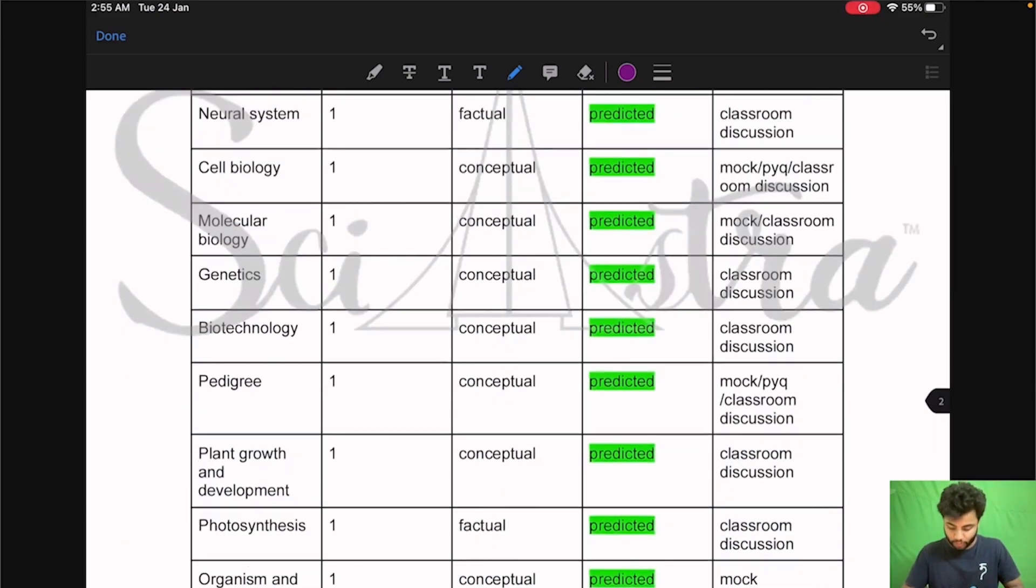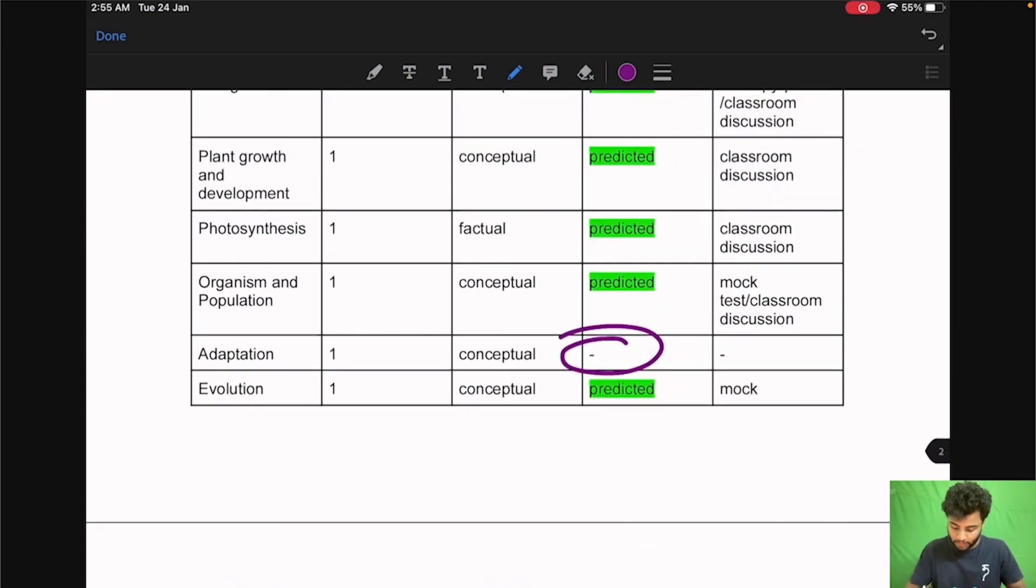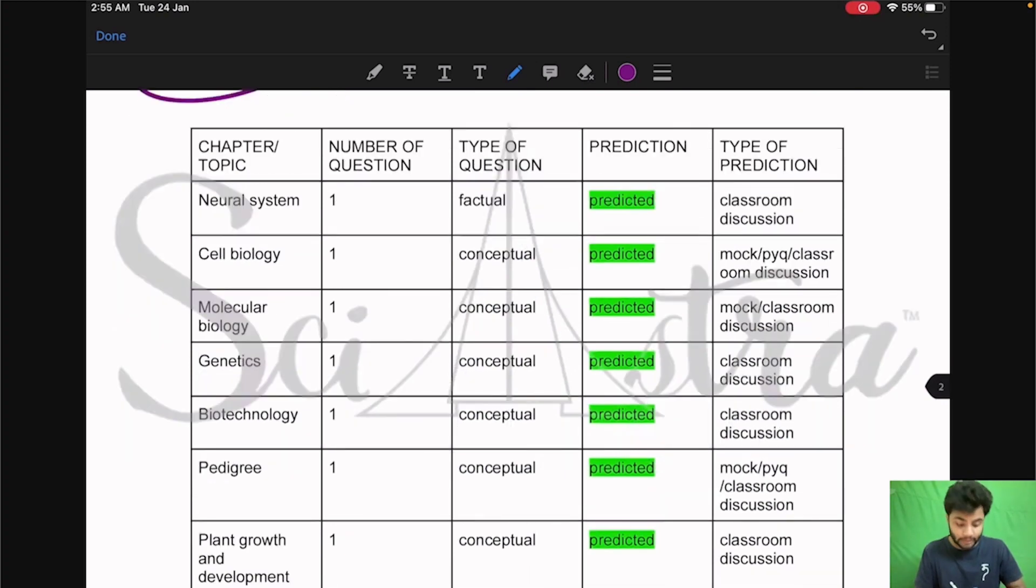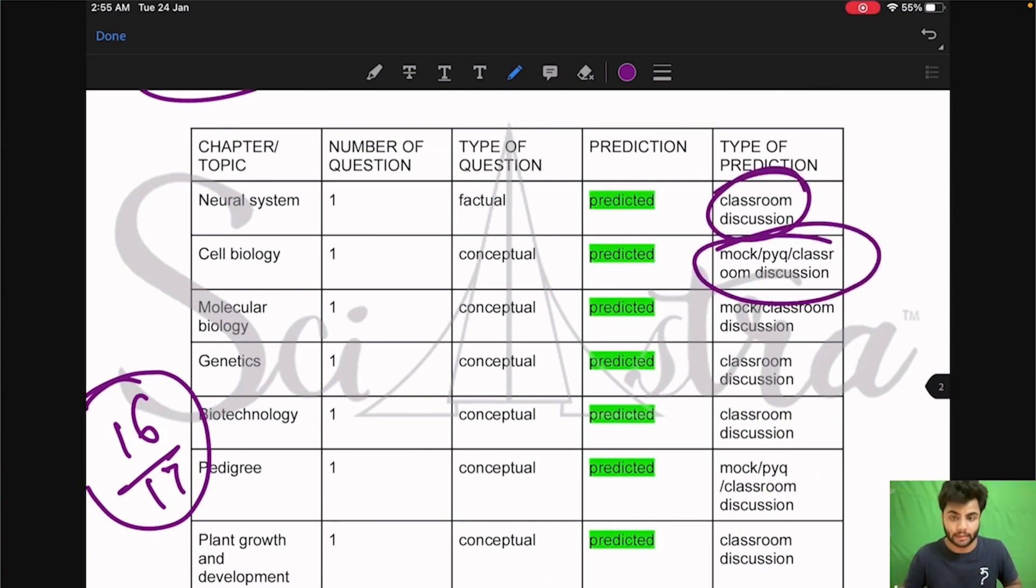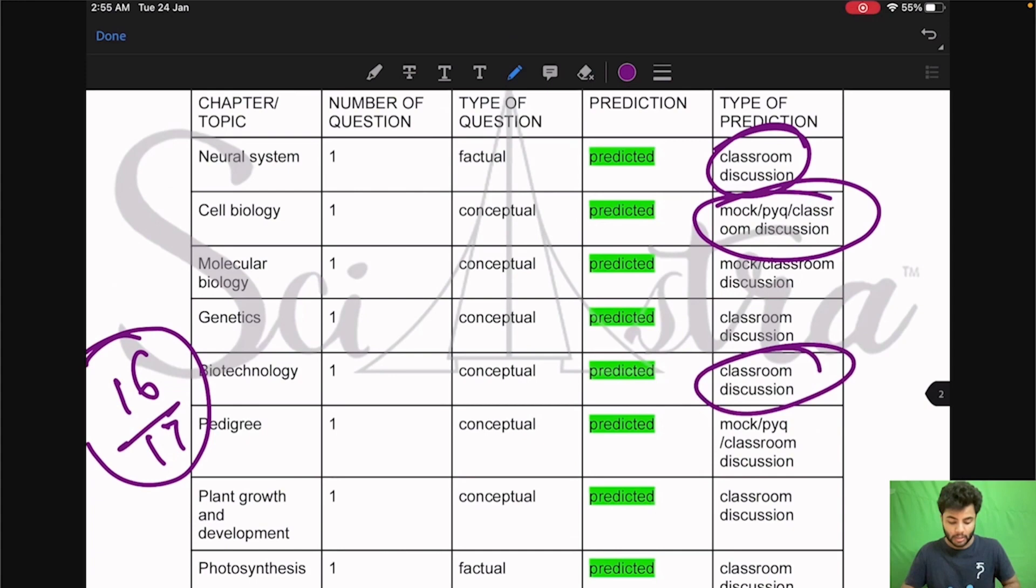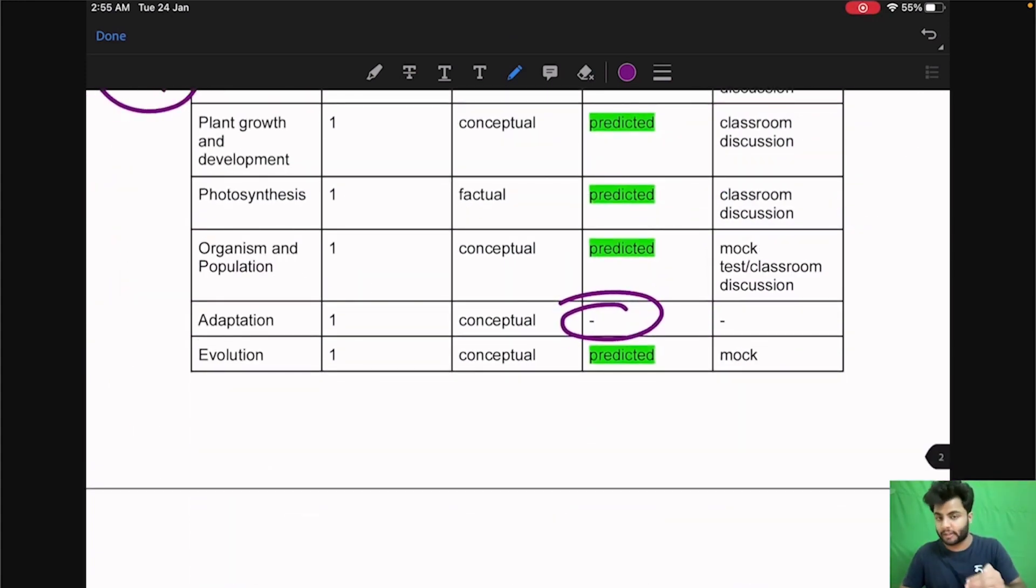So like this for session one and similarly for session two. Now in session two if you see except this one, so out of 17, 16 questions out of 17 questions in session two biology were already predicted. Either discussed in the classroom or the mock test previous year paper and classroom. So these are the things you can already see. I will give you this PDF.